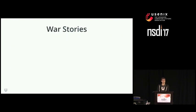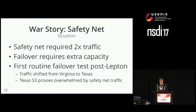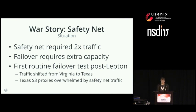I'll share a couple of war stories from production. When we initially deployed the Lepton safety net, we ran into an issue that caused an availability hit. The safety net naturally requires about twice as much traffic to our durable storage systems. Our first routine failover test after Lepton shifted traffic from Virginia to Texas — our S3 proxies in Texas were totally overwhelmed by the safety net traffic and availability dropped dramatically until we realized Lepton was the root cause. We turned off compressions, making the safety net unneeded since new images would just be compressed with Zlib.